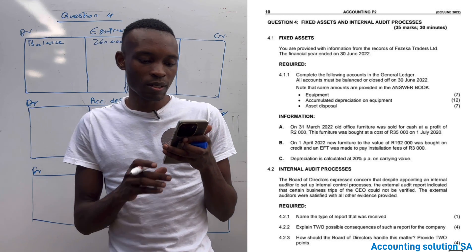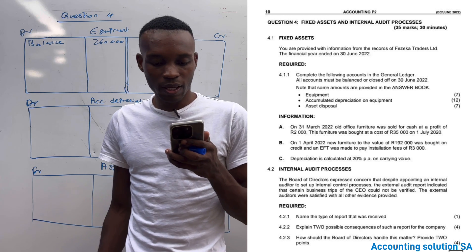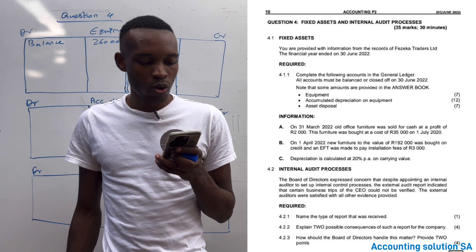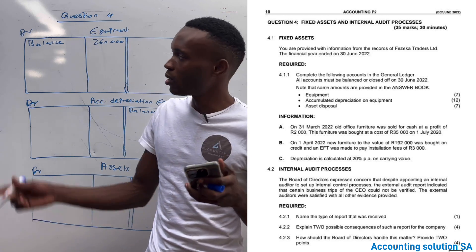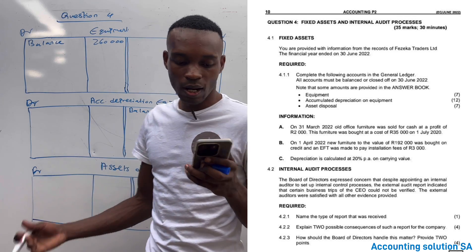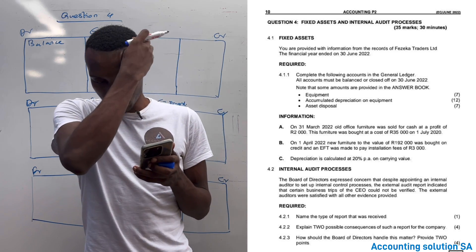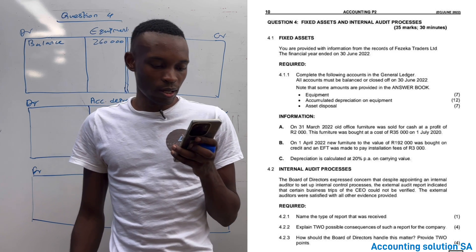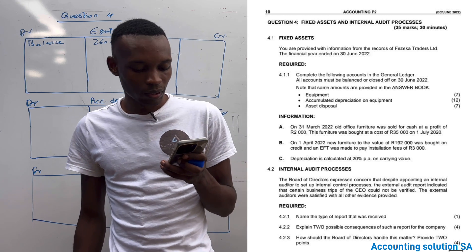As you can see on the question paper 4.1, they said fixed assets: you are provided with the information from the record of KZ Traders Limited, the financial year end 30 June 2022. Required: complete the following accounts - equipment account, accumulated depreciation for equipment, and asset disposal. A total is 35 marks including internal audit procedure.